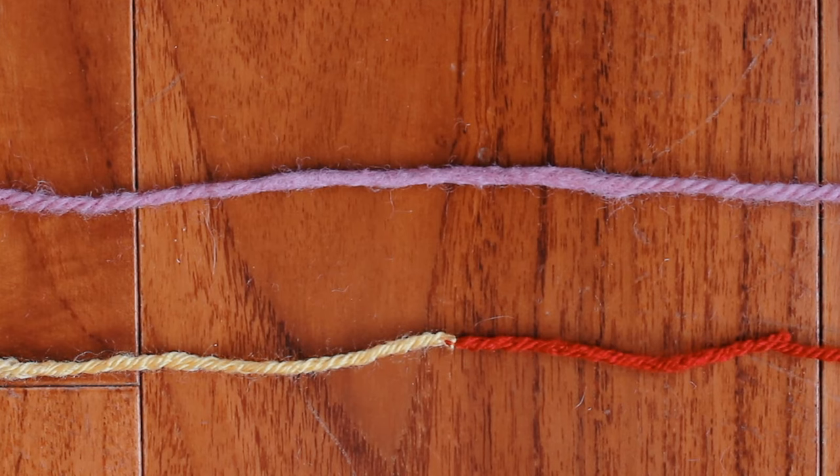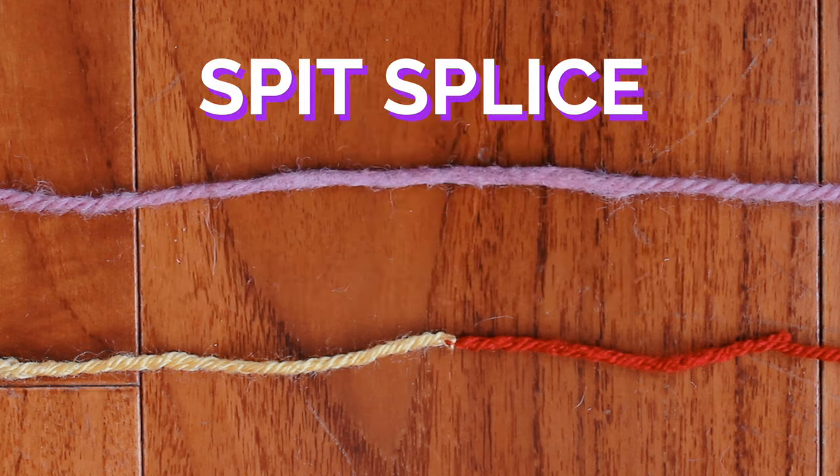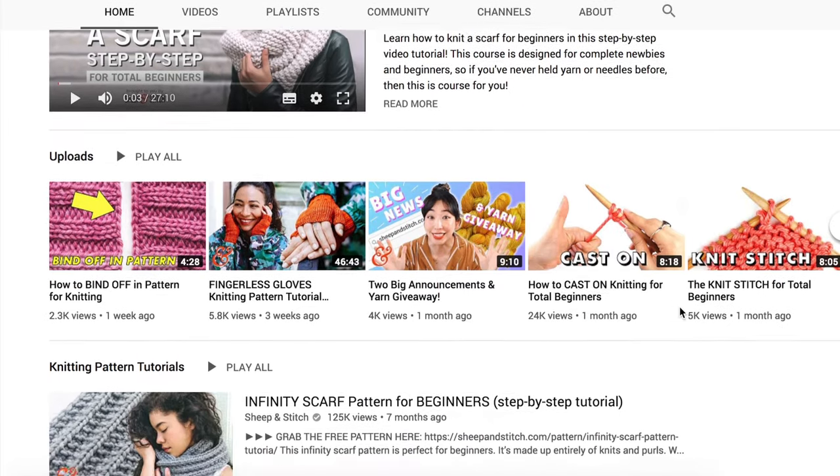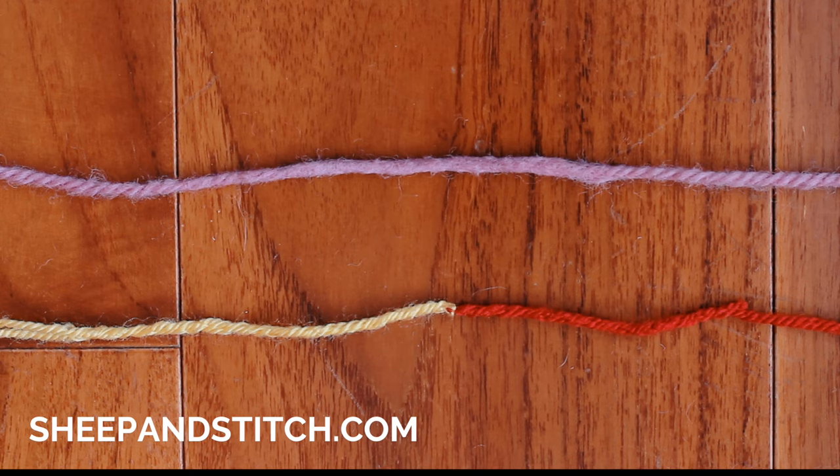Now you've got two ways to join yarn invisibly. Let me know which one you're going to use, Russian join or the spit splice. Like this video if you liked it, and subscribe for more videos like this one. I'm Davina from SheepAndStitch.com, thanks for watching, happy joining, and I'll see you in the next video. Bye!